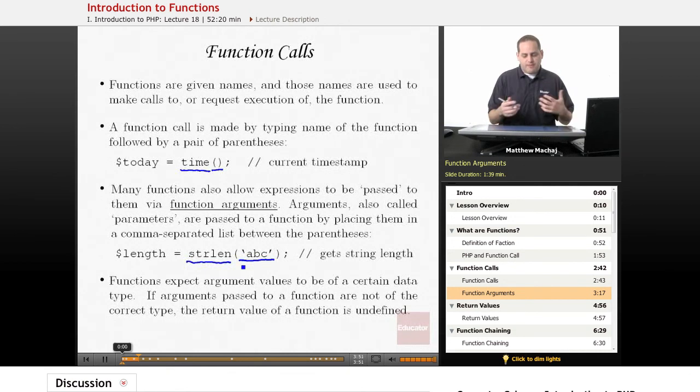And so what happens is when this line of code right here is run, when PHP gets to the strlen function call, it stops execution, goes out to the strlen function code, uses this value right here that was input as a function argument to the function, and returns the length of that string. And that's the particular function of the string length function. So in this case, it would return the value of 3.